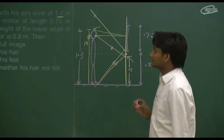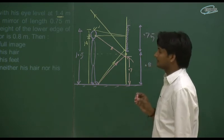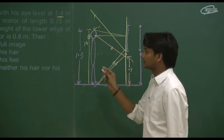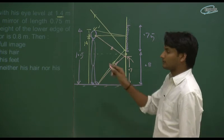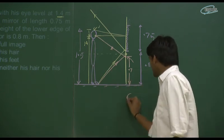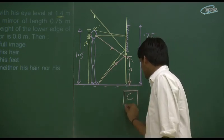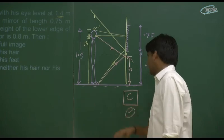The boy cannot see his hair. The boy cannot see his feet. C option is correct. You cannot see his feet. So C option is correct here.